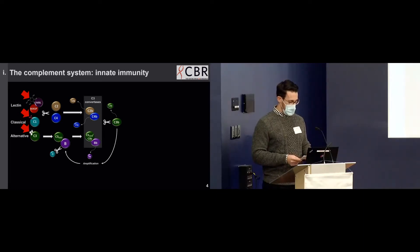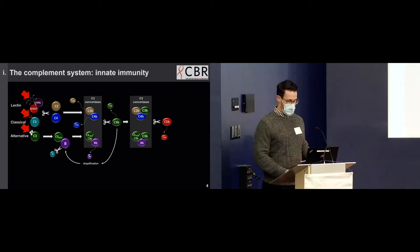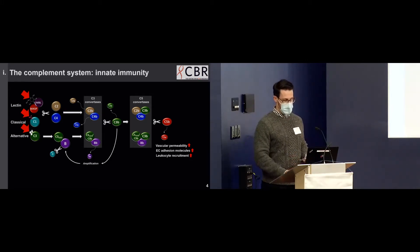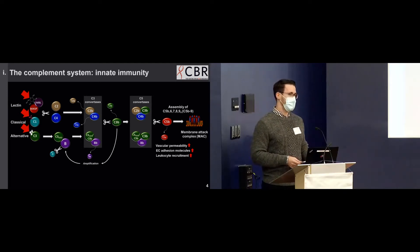Some C3B is incorporated into C3-convertases, which shifts their substrate specificity from C3 to C5. These C5-convertase complexes generate C5A and C5B. C5A is a very potent anaphylatoxin that triggers increased vascular permeability, localized endothelial cell degranulation, and leukocyte chemotaxis. C5B binds to the cell membrane acting as the nucleus for formation of the membrane attack complex, a multi-protein complex that inserts into the cell membrane with the goal of killing the targeted cell.